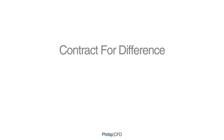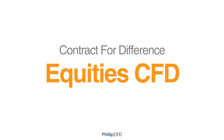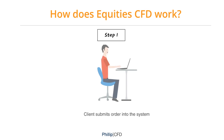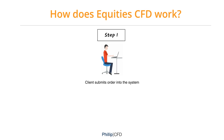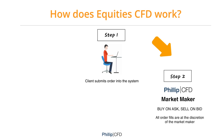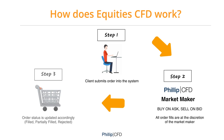How does Equity CFD work? Here are 3 steps to illustrate the order process. Firstly, the client submits an order into the system. Then, the orders will be sent to our market makers, who will fill the order based on buy on ask, sell on bid. Do take note that all order fills are at the discretion of the market maker. After which, the status of the order will be updated and reflected accordingly in the system.